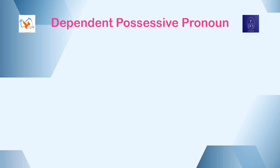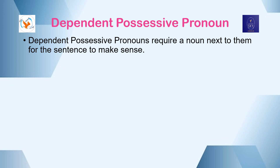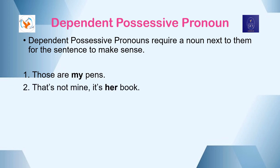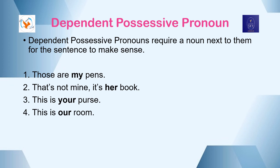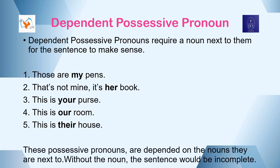Dependent possessive pronouns require a noun next to them for the sentence to make sense. These are sometimes called possessive adjectives because they describe how an object is owned. Look at the following sentences: Those are my pens. That's not mine — it's her book. This is your purse. This is our room. This is their house. These possessive pronouns depend on the nouns they are next to; without the noun, the sentence would be incomplete.